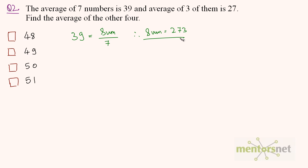The average of 3 of those 7 numbers is 27. So 27 is equal to — let us say the sum of those 3 numbers is S1 — divided by 3. Therefore S1 is equal to 27 times 3, which is 81.